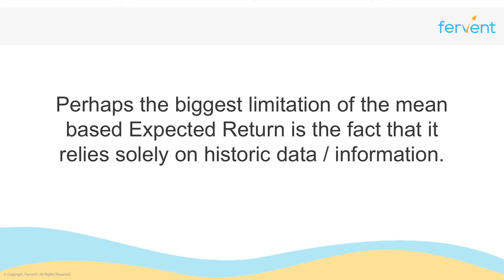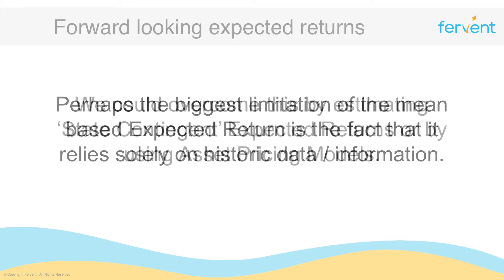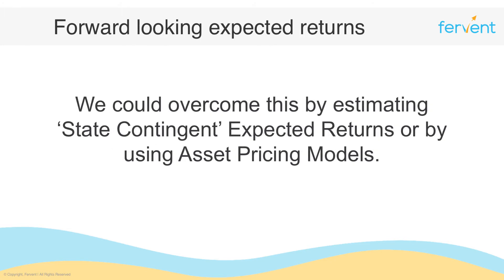What we can do is apply relatively more sophisticated methods to estimate the expected return — for instance, we could estimate expected returns using state contingent weighted probabilities or by using asset pricing models. Spoiler alert: although these techniques are more sophisticated, they're not the holy grail of finance. There's no one solid method that is the right method. For this course, though, we're going to focus on learning these other methods as well, and we'll do that over the next few videos.